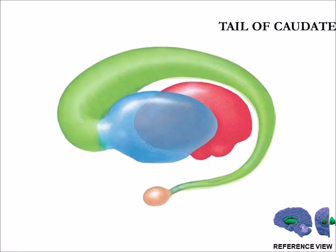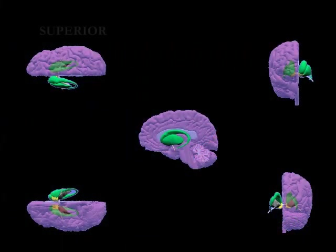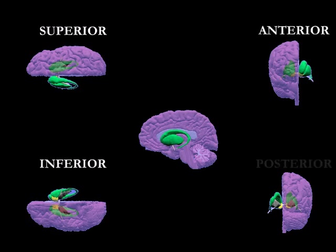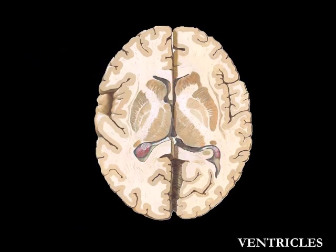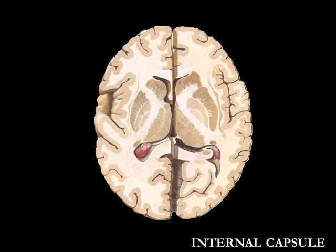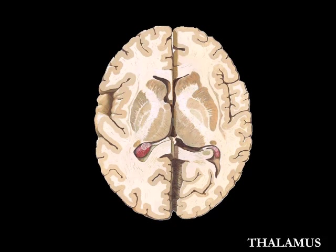This picture explains the basal ganglia structures in different views, showing the clear location of the thalamus, putamen, globus pallidus, and caudate. In the axial view, note the close relations of the thalamus and caudate nucleus on the lateral wall of the lateral ventricles on both sides. The internal capsule is a white matter structure that carries information past the basal ganglia, separating the caudate nucleus and the thalamus from the putamen and globus pallidus. The thalamus is separated from the basal ganglia by the posterior limb of the internal capsule.